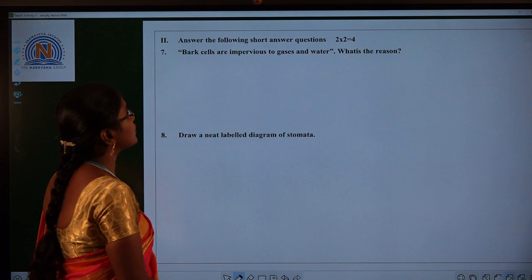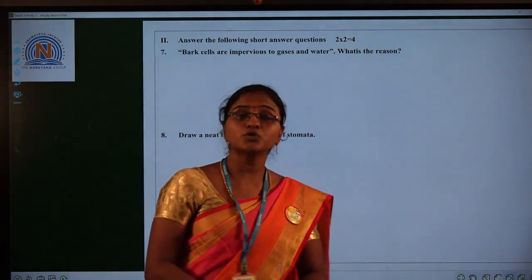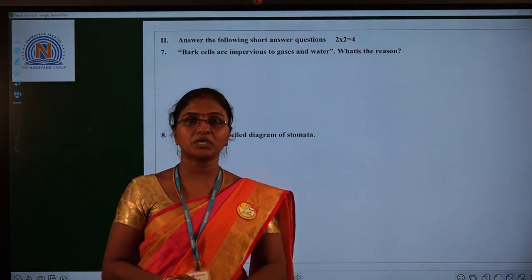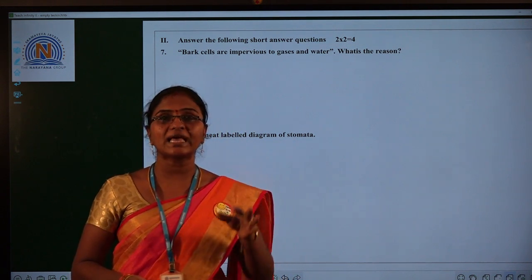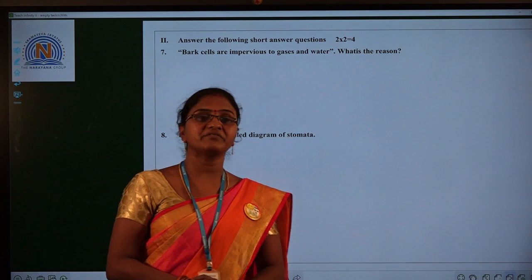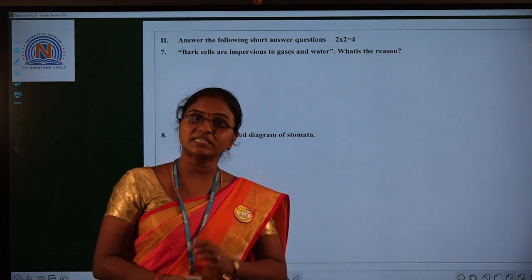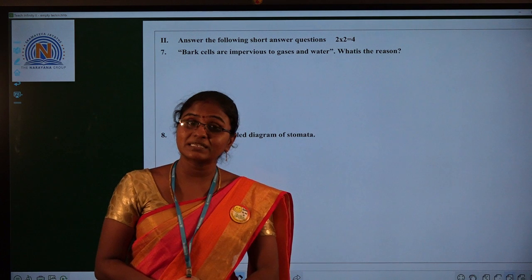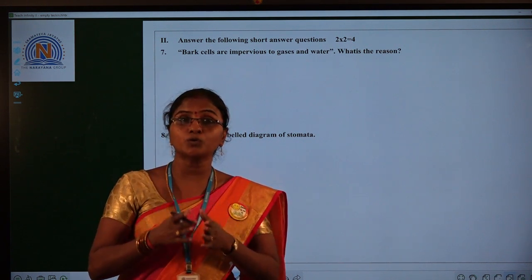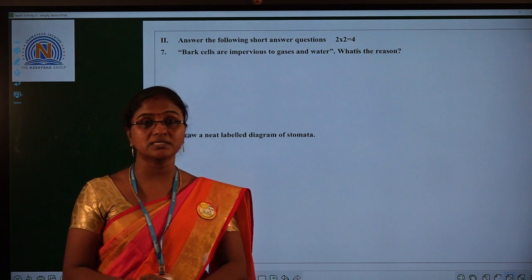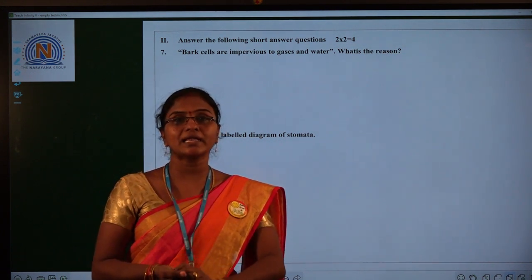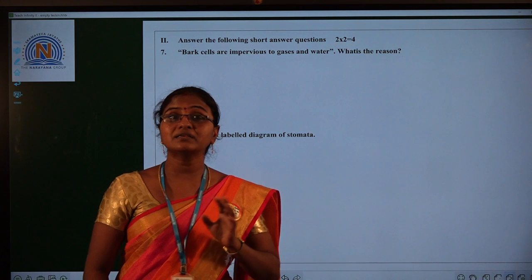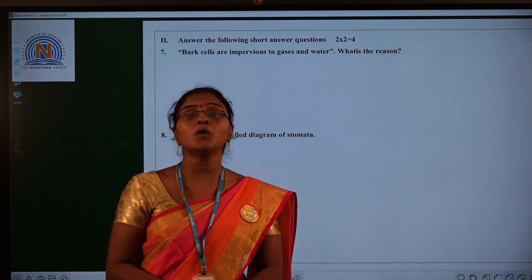Bark cells are impervious to gases and water. What is the reason? So what is meant by impervious? Impervious means it does not allow anything to pass through it. If anything not allowing fluids or any gases to pass through it, they are called as impervious. So bark cells are impervious. Why? What is the reason? Because if you observe the cells in the bark, the cells in the bark are dead cells. And another thing, they are compactly closed without any intracellular spaces. And another thing, these cells contain a material called suberin. Because of presence of this material and dead cells, the bark cells are impervious and it does not allow anything.